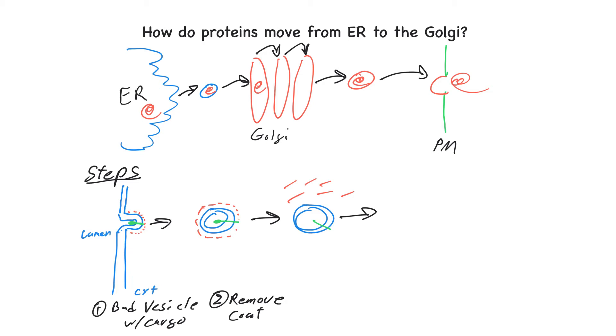So the next step is to target and dock the vesicle to the target membrane. In this case, it's going to be the Golgi. So I'm going to draw the Golgi membrane like so, trying to keep the colors coordinated, so red, Golgi. And then what happens is the vesicle has proteins on it that then allow it to dock and recognize cognate proteins on the Golgi surface. So there's kind of this molecular handshake that occurs.